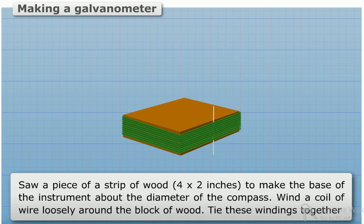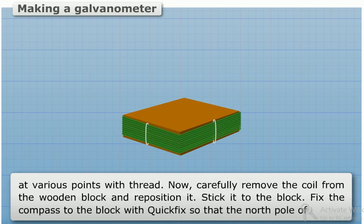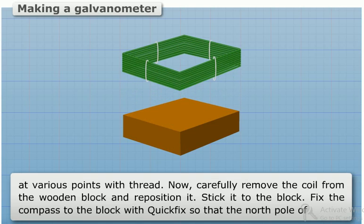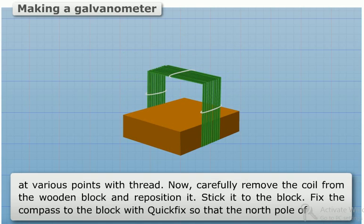Tie these windings together at various points with thread. Carefully remove the coil from the wooden block and reposition it. Stick it to the block. Fix the compass to the block with Quickfix so that the north pole of the magnetic needle is positioned as shown.